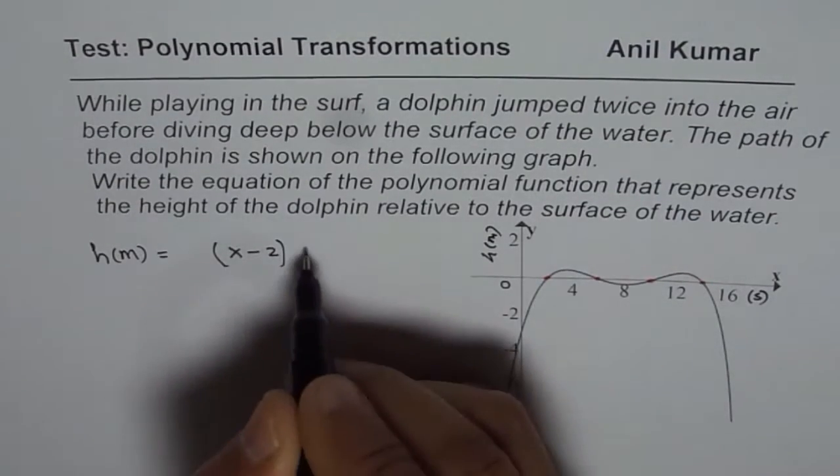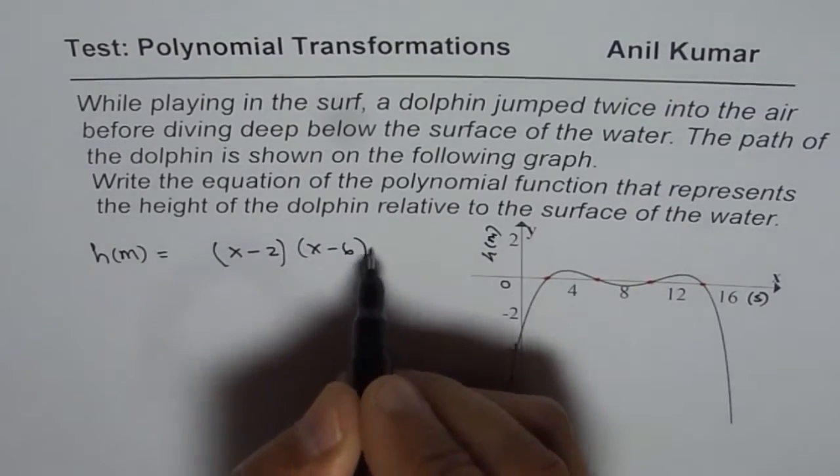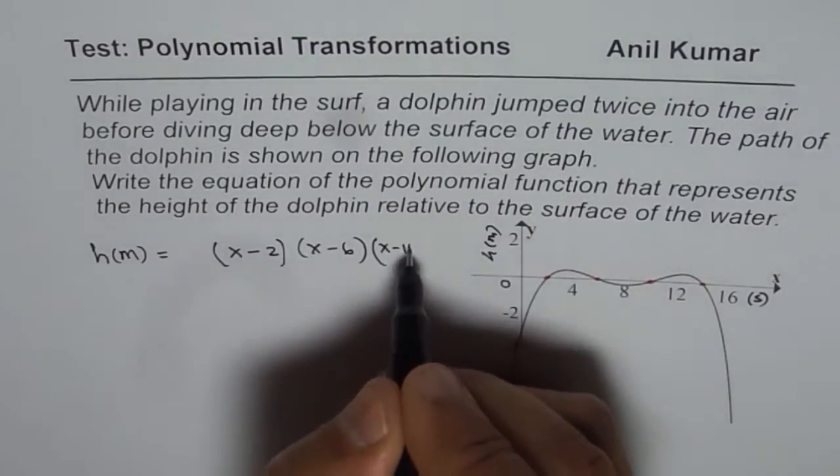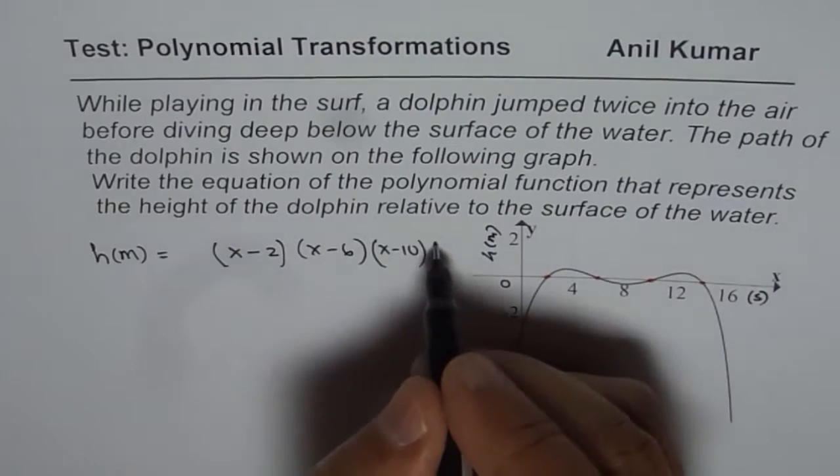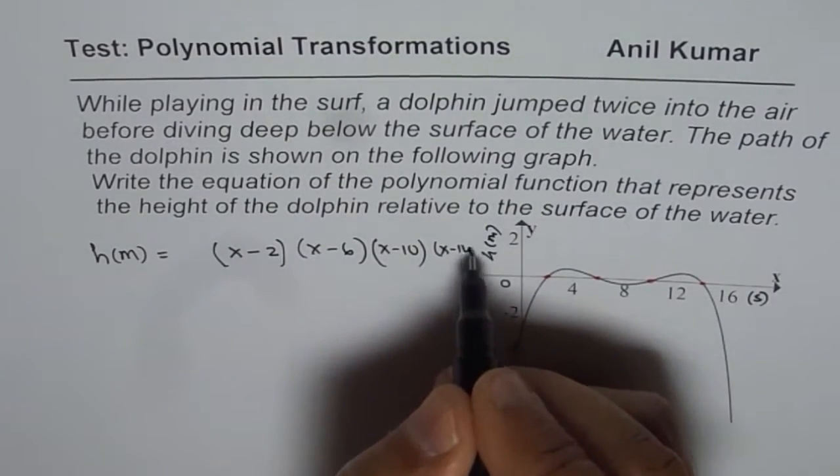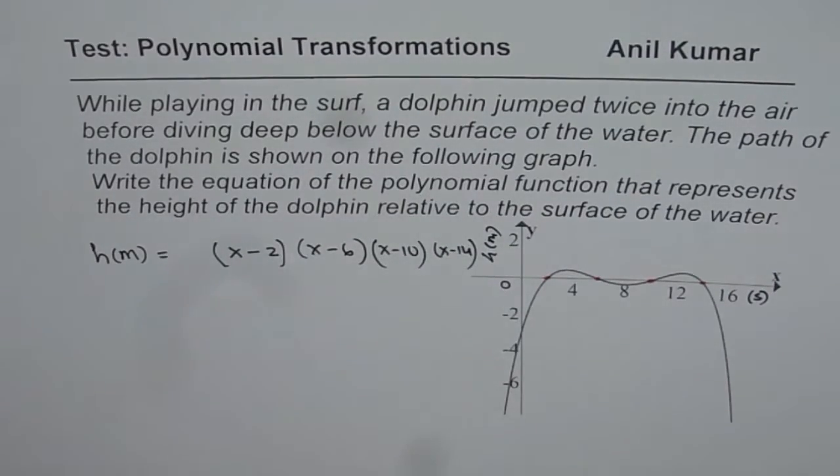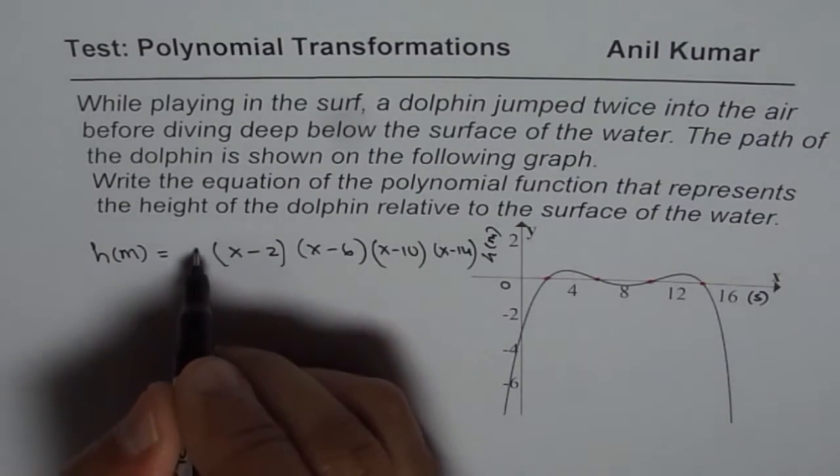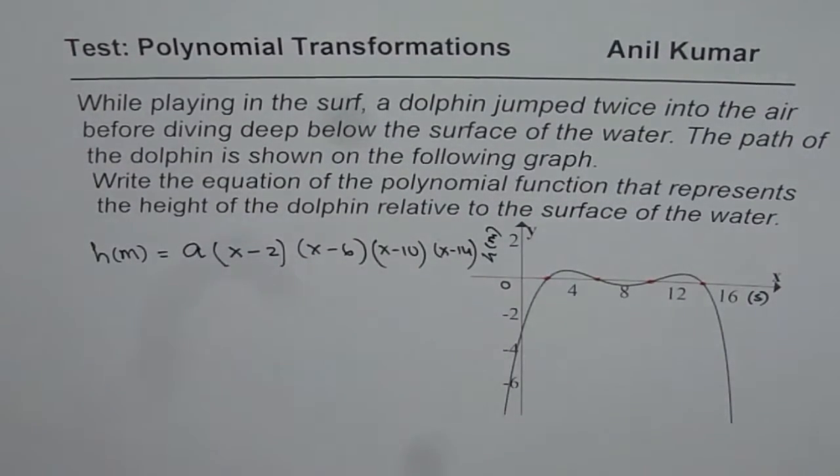The next will give you at 6, x minus 6. Then we have x minus 10 and then 14, x minus 14. Now most of the students will just write in factored form and they may forget to write a here. So that could be a mistake.